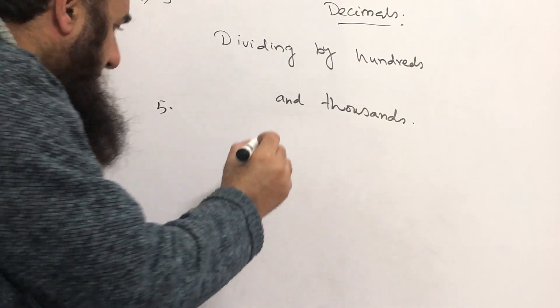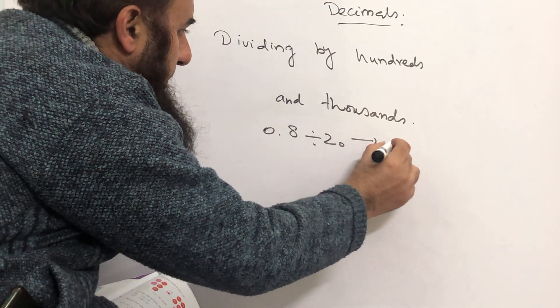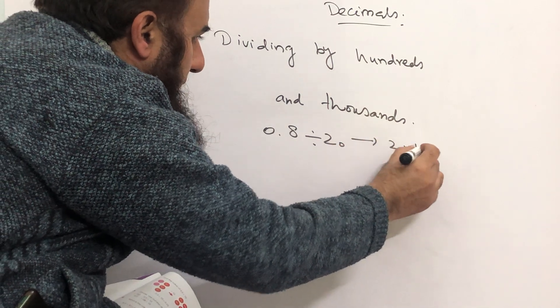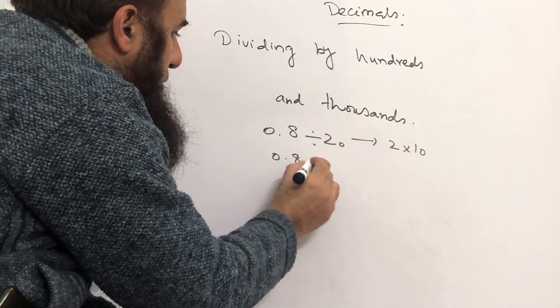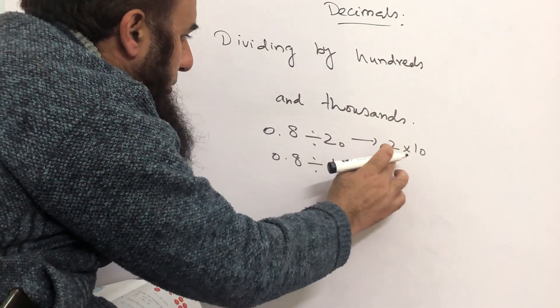Bismillahirrahmanirrahim. Question number 5 is 0.8 divided by 20. This 20 will make it 2 into 10 or 10 into 2. So we will say 0.8 divided by 10 divided by 2, because 20 is 10 and 2.